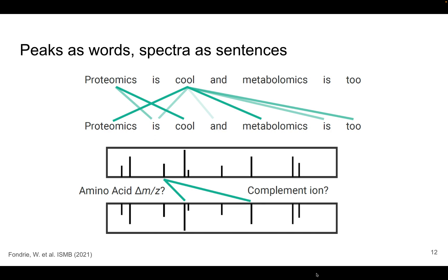Transformer models are powered by what's called a self-attention mechanism, and as illustrated here in the natural language processing setting, self-attention basically helps us learn contextualized representations for, for example, words in a sentence, so all words are represented within the context of all the others. To extend this analogy to mass spectrometry, we can think of spectral peaks as the words in the sentence and the spectrum as a whole as the sentence itself. With the transformer model, we can learn representations for all of these peaks within the context of the others, giving us a way of richly representing the spectra in a latent space, which we can use for de novo sequencing.